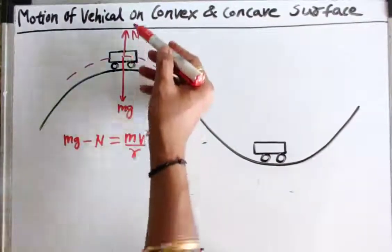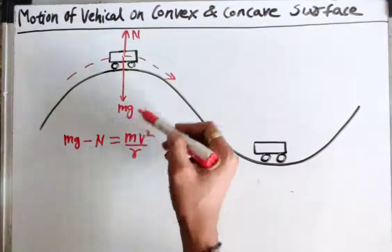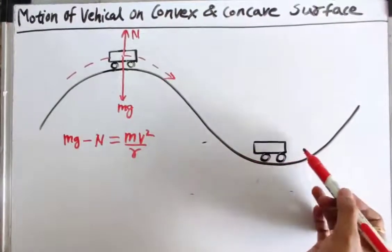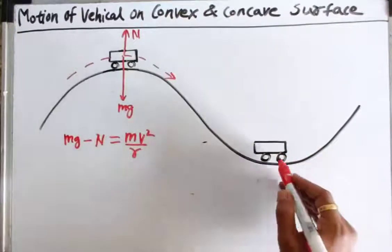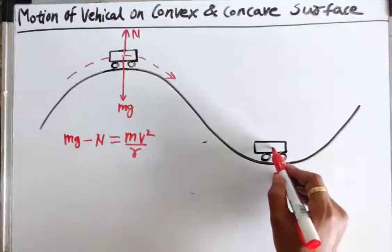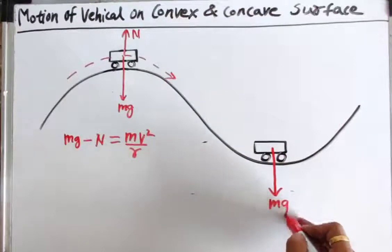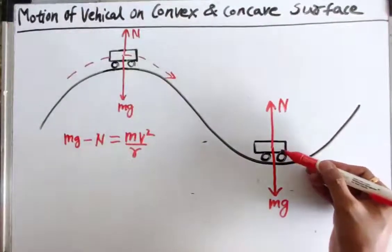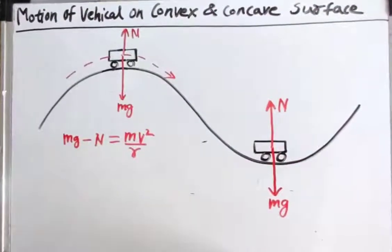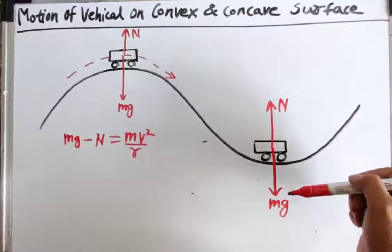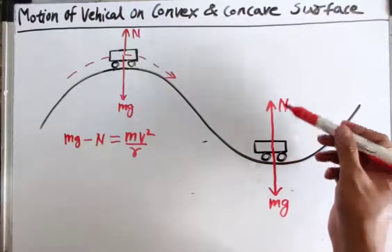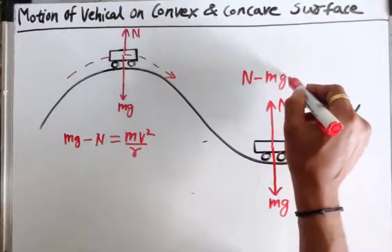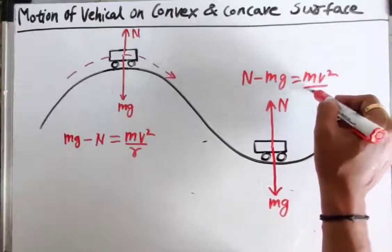mg acts in the downward direction, n in the upward direction, so mg minus n gives us the resultant centripetal force. Now, in the concave surface, when the vehicle is present at its lowest position, the forces acting on the vehicle are its weight mg acting vertically downwards and normal reaction n between the road and the vehicle in the upward direction. The resultant of these two gives the required centripetal force, directed upward toward the center of the curved path, and is given by n minus mg is equal to mv² upon r.